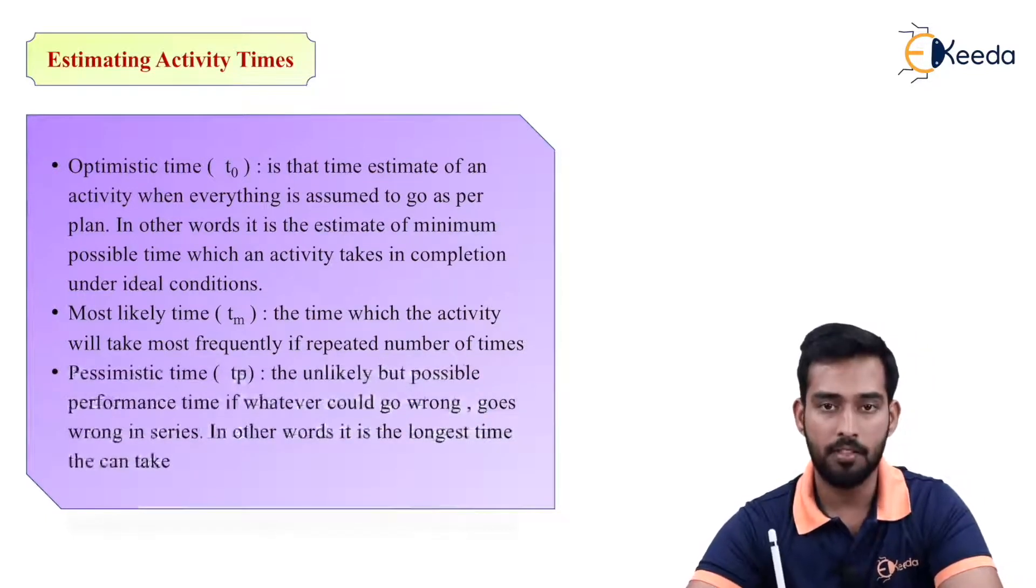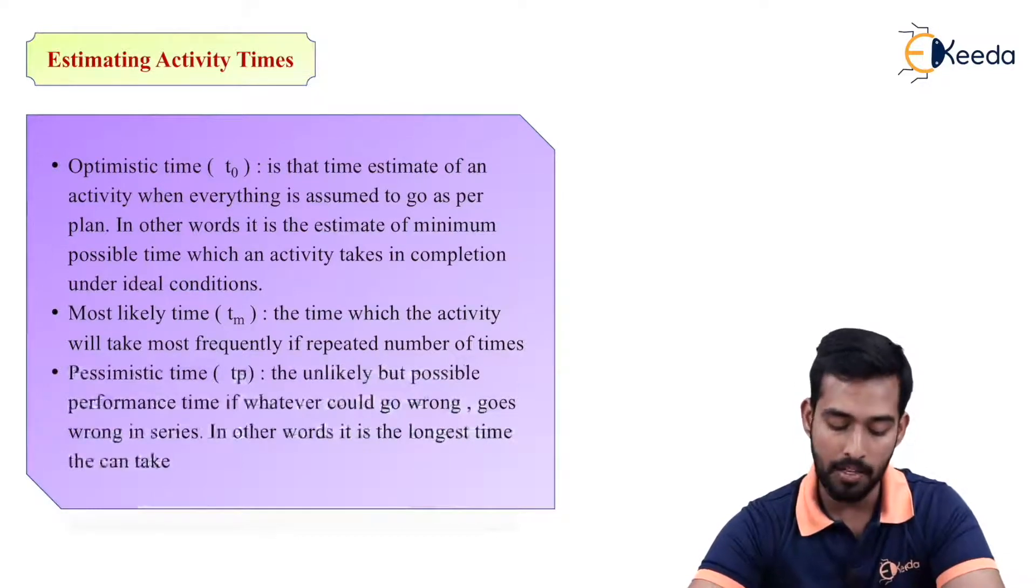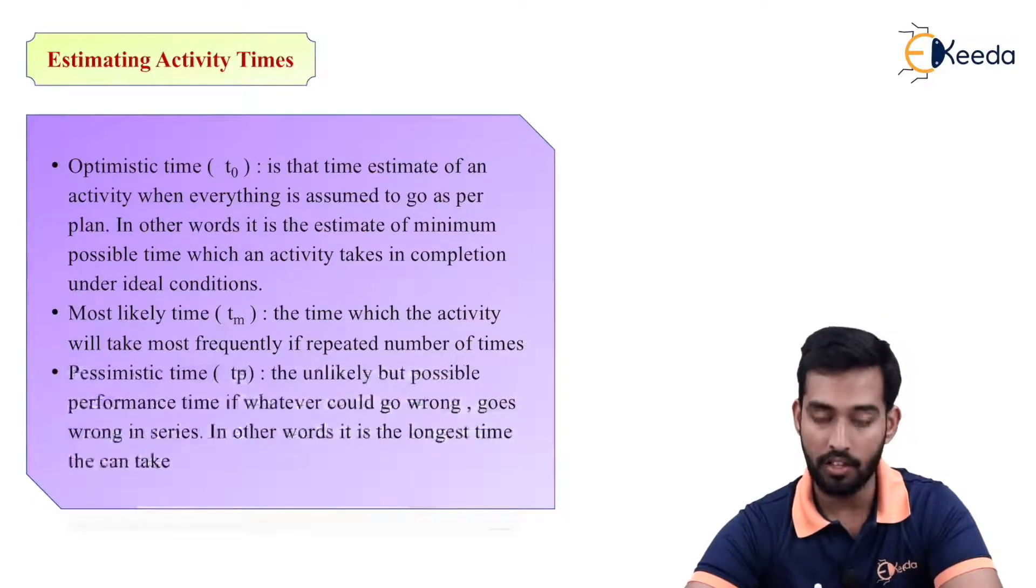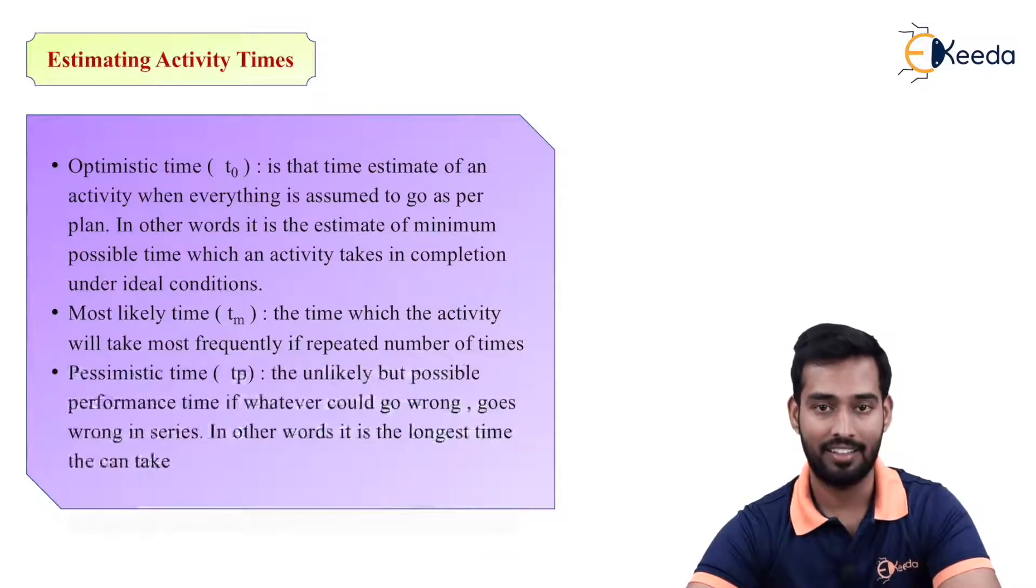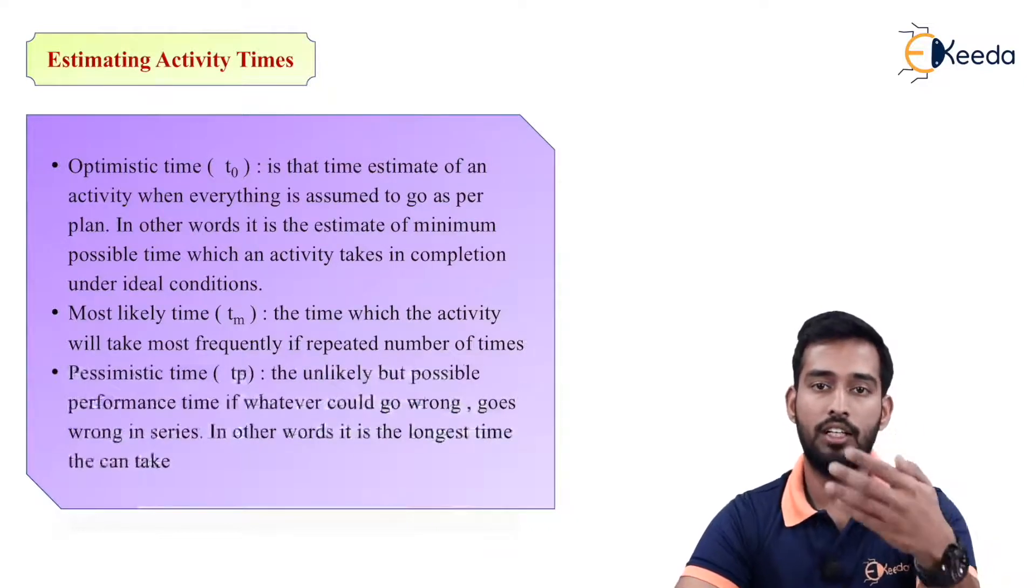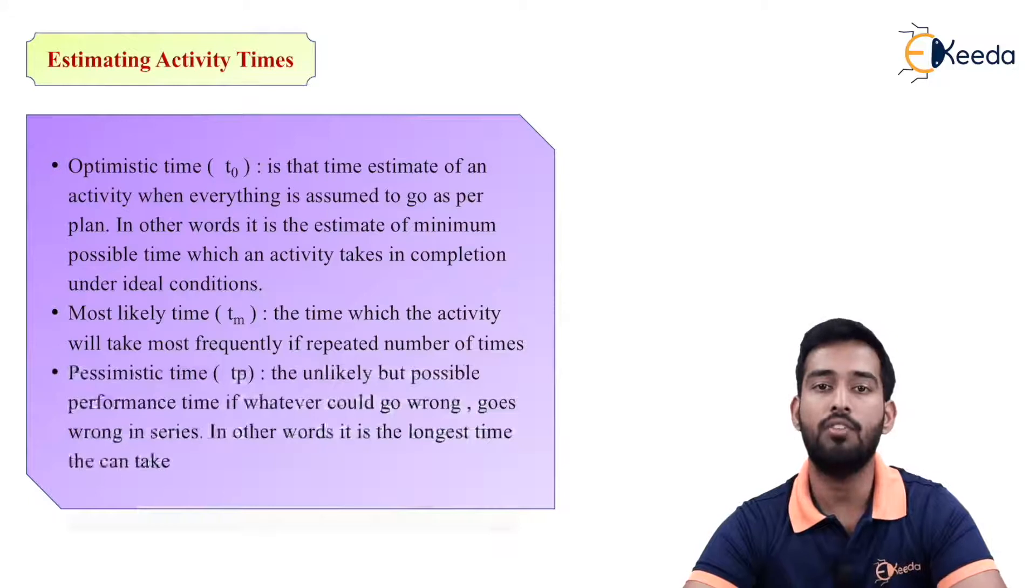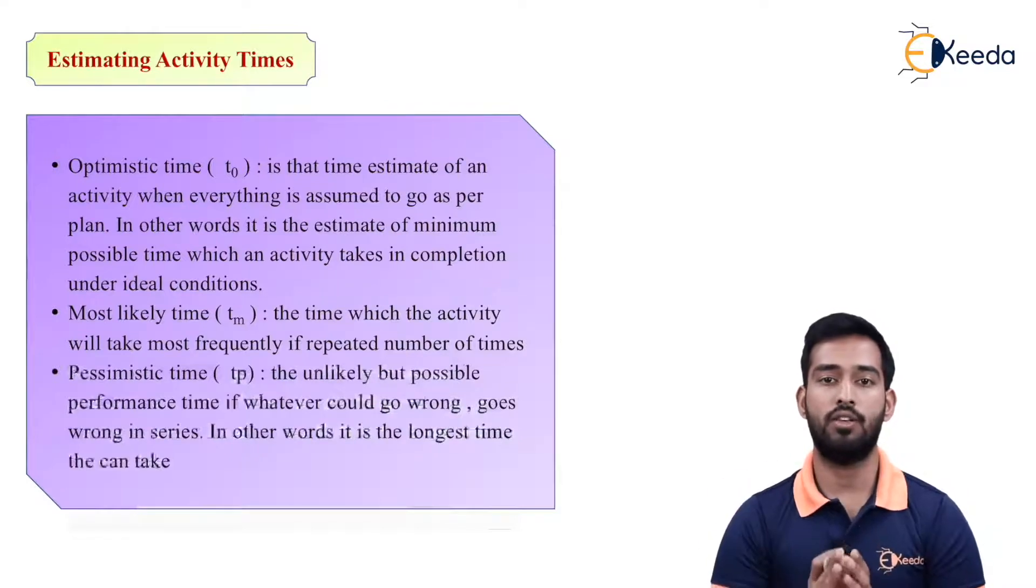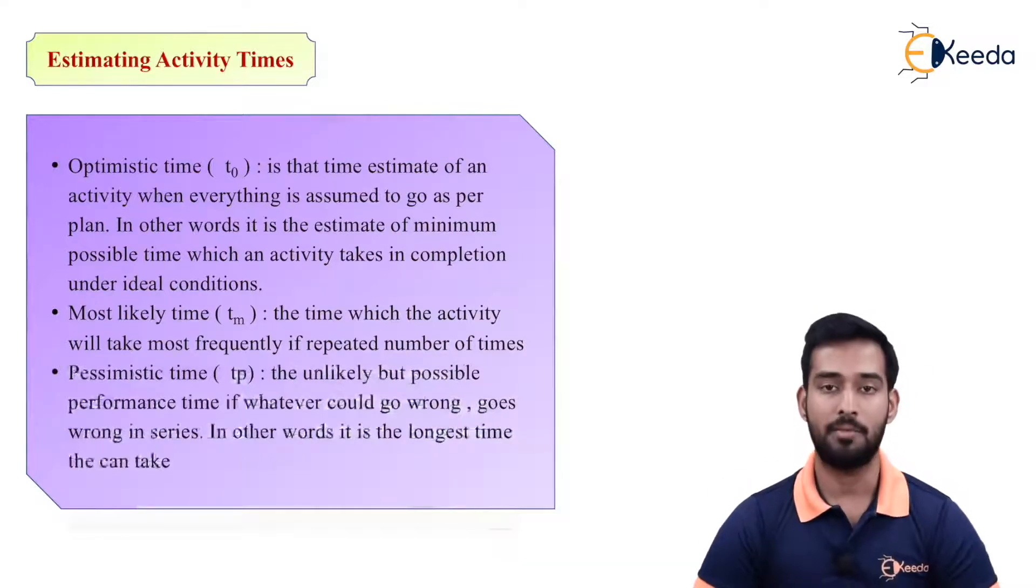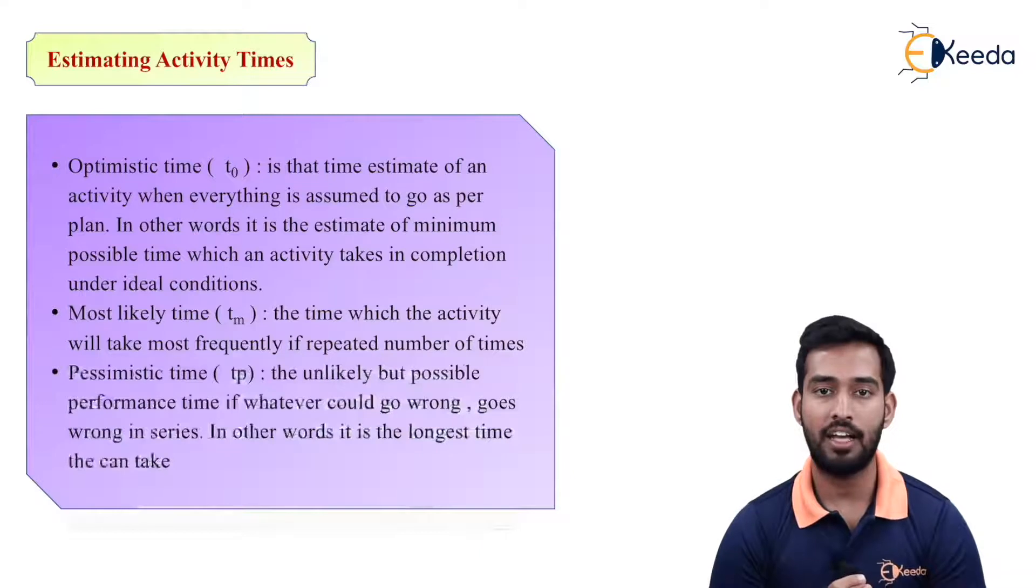Next is pessimistic time TP. The unlikely but possible performance time if whatever could go wrong, goes wrong. In other words, it is the longest time the activity can take. So optimistic time is what? Everything is on ideal condition. And pessimistic time is what? Considering all the delays and any wrong event happening, the longest time will require to complete this activity. That is your pessimistic time. So we have to calculate three time estimates: optimistic time, then your most likely time and pessimistic time.